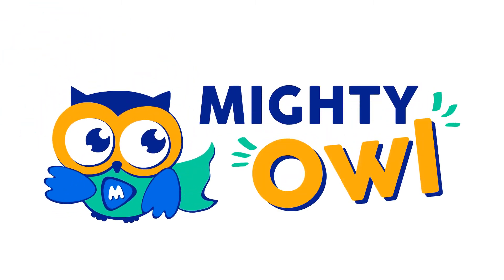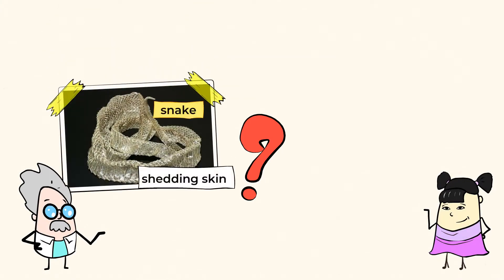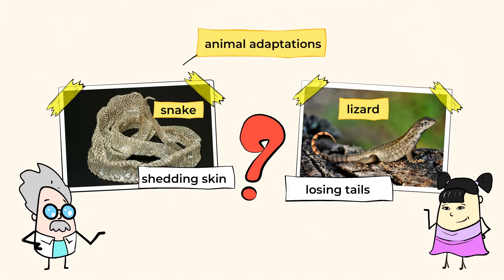Hello, this is Mighty Owl. Have you ever wondered why snakes shed their skin? Or why lizards lose their tails? Well, it's definitely not because they needed something new to wear or got tired of their own body. These are, in fact, examples of animal adaptations.